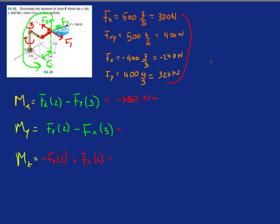For MY, 300 times 2 minus FX, 240, times 3. Minus 120. Minus 120 newton meters.